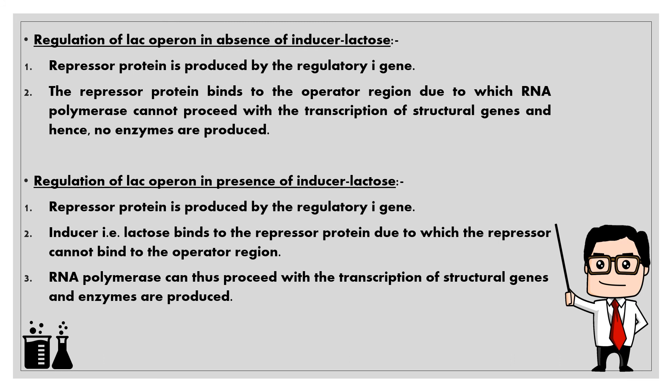Regulation of the lac operon in the presence of inducer lactose: repressor protein is produced by the regulatory I gene. Lactose (the inducer) binds to the repressor protein, preventing it from binding to the operator region. RNA polymerase can thus proceed with the transcription of structural genes and enzymes are produced.